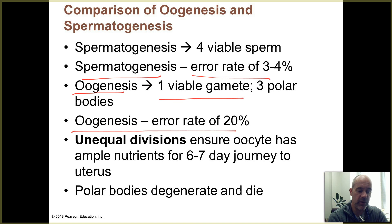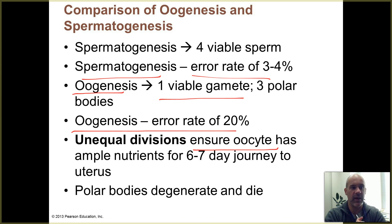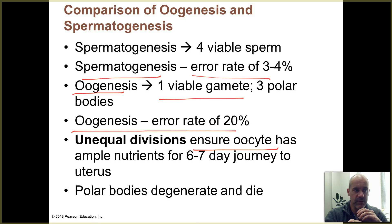The oocyte is also unusual because it is a very large cell. As a primary oocyte divides into a secondary oocyte and a polar body, and then the secondary oocyte divides into the second polar body and the ovum, the ovum retains the interior contents. It's a huge cell to begin with, and this is important because the oocyte needs lots of stored nutrients.